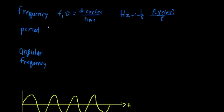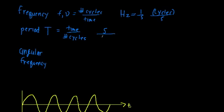Period is typically denoted with a capital T. By definition, it's the time it takes to undergo a certain number of cycles, and the standard definition is the time it takes for one cycle. The units of period are seconds — or seconds per cycle if you're bookkeeping. We know that frequency is inversely related to the period, which means F is equal to 1 over T, or T is equal to 1 over F.